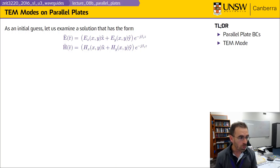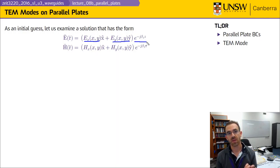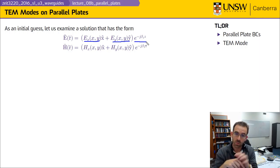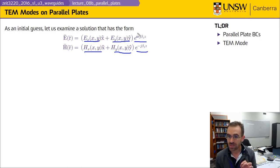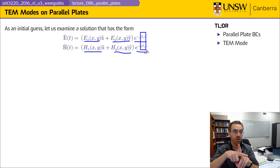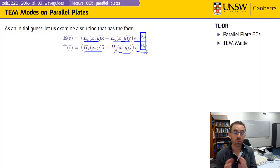We're going to determine if a solution of this form — where the electric field has an x component and a y component — varies as a function of x and y, but its z dependence looks like e to the minus j beta_z times z. This is a solution that can vary in the xy plane but propagates along the z axis in a way familiar from transmission lines and plane waves. Likewise, the magnetic field can have x and y components that also vary transversely and propagate with the same propagation constant beta_z. Both components travel together — that's why it's transverse electromagnetic.